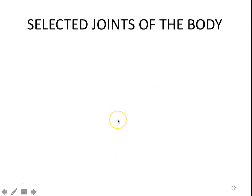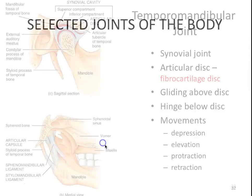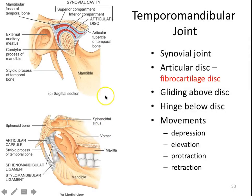Now we're going to talk about different joints of the body and highlight some of these — you would have seen these in lab as well. The temporomandibular joint — you've probably heard of TMJ. When someone says they have TMJ, what they're talking about is a temporomandibular joint. It is a synovial joint with an articular disc made of fibrocartilage.